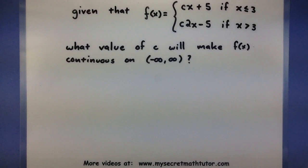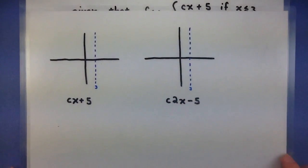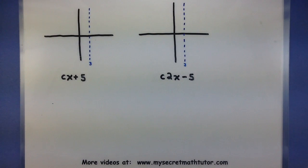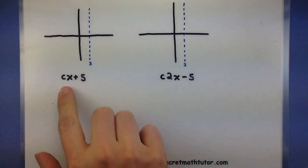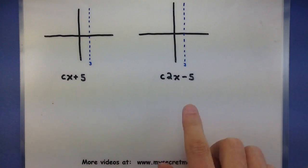We need to figure out a c that makes both pieces of this piecewise function line up. To understand this problem better, let's explore both pieces of the piecewise function. If you extract out both pieces, you get cx plus 5 and the other piece is c times 2 times x minus 5. By themselves, each of them are essentially lines.